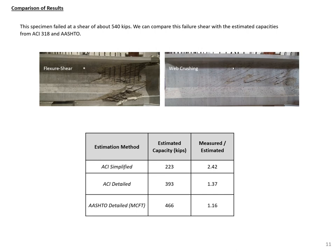Finally, we compare our estimated capacities to the experimental failure shear of approximately 540 kips. The ACI simplified method gives 223 kips — dramatically underestimating, so it is conservative but excessively so. The ACI detailed method gets closer, overestimating capacity by about 37 percent. The AASHTO detailed method is still conservative and is the most accurate of the three. That concludes this example problem.